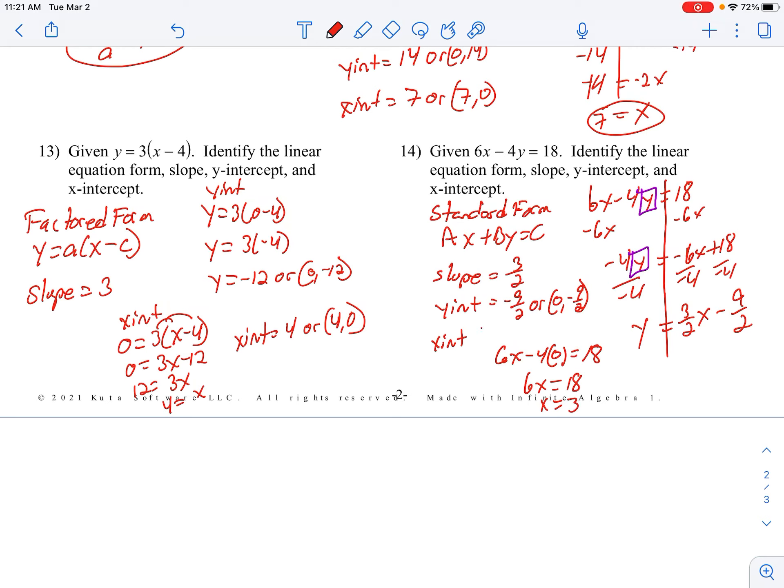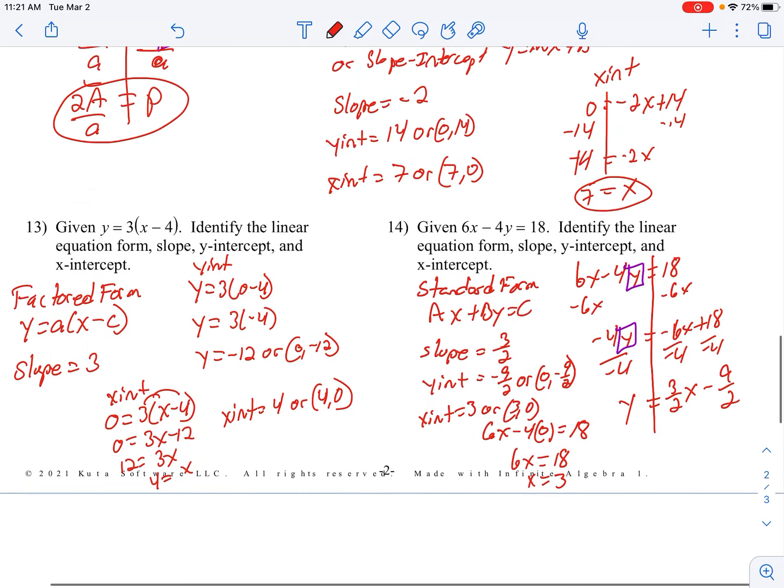That gives me X to be then 3. So 3 is the X-intercept, or we can write it as 3 comma 0.